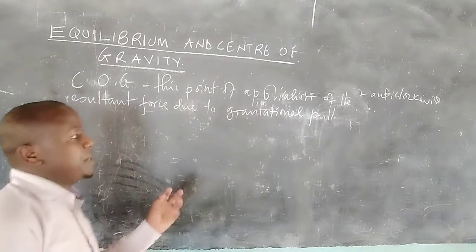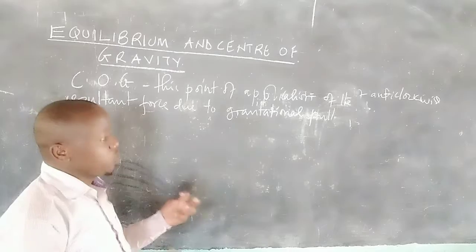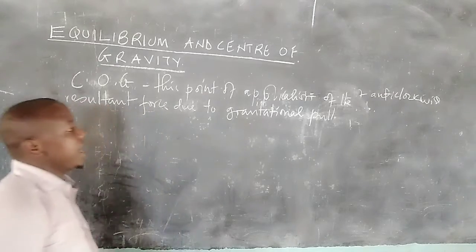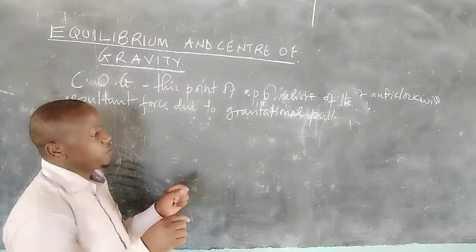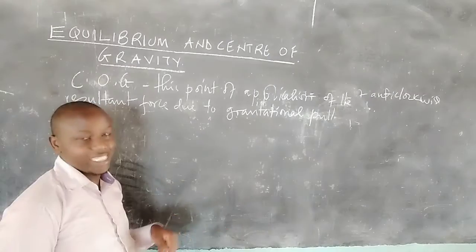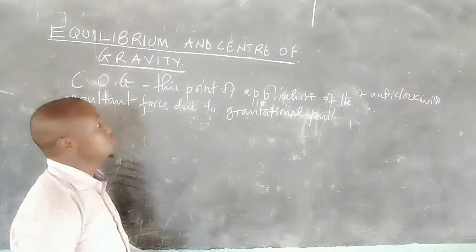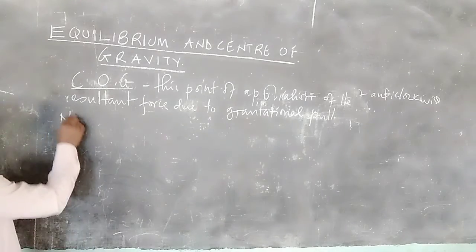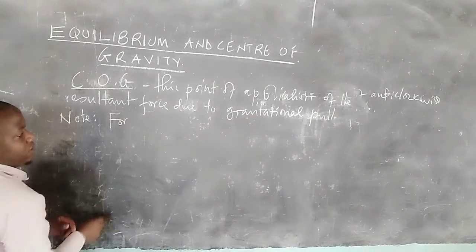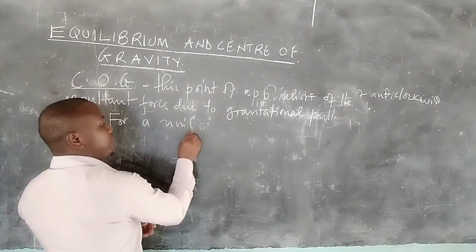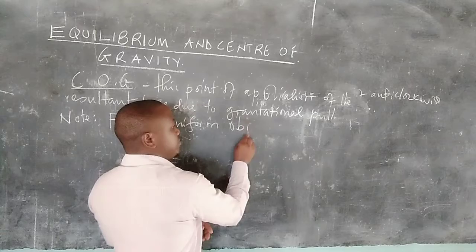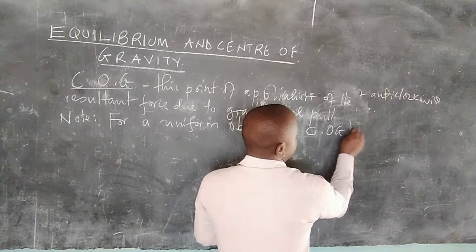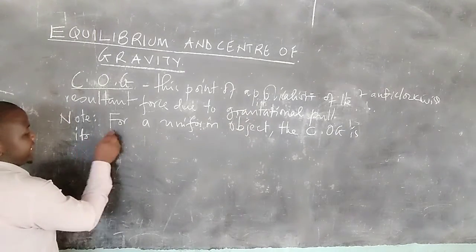All bodies are pulled towards the center of the earth by gravity. There is a specific point in the body through which that resultant gravitational force acts, and that point is what we call the center of gravity. For a uniform object, the center of gravity is its geometrical center.